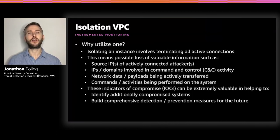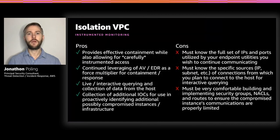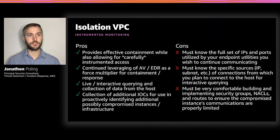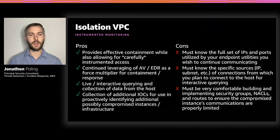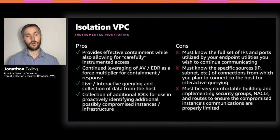What are the pros and cons of an isolation VPC? It provides effective containment while also allowing for carefully instrumented access. You're allowed to continue leveraging your AV and EDR solutions as a force multiplier for containment and response. It allows live and interactive querying and collection of data from the host, and you can continue to collect additional IOCs for use in proactively identifying additionally possibly compromised instances and infrastructure. Some downsides: you must know the full sets of IPs and ports utilized by your endpoint utilities if you wish to have them continue communicating. You must know the specific sources of connections from what you plan to connect to the host for interactive querying. And you must be very comfortable building and implementing security groups, NACLs, and routes to ensure the compromised instance's communications are properly limited.